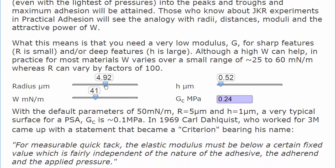Here's the calculation. If we have a radius of, say, 5 microns and a height of, say, half a micron and a work of adhesion of 41 millinewtons per meter, then this critical value is 0.24 megapascals. In 1969, Carl Dahlquist came up with this quote. He worked for 3M. For measurable quick tack, the elastic modulus must be below a certain fixed value which is fairly independent of the nature of the adhesive, the adherent, and the applied pressure. He decided that this was about 0.3 megapascals, and with these typical values, we're in the 0.1 to 0.2 megapascal range. So you must get your modulus low enough so that it is less than the Dahlquist criterion.